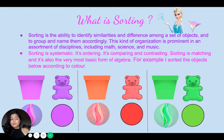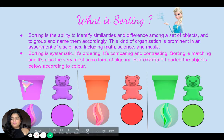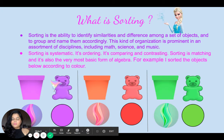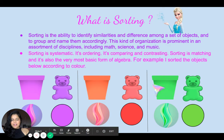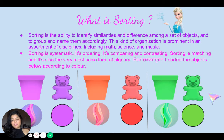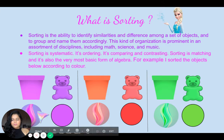For example, I sorted the objects below according to color. I put the purple objects in the left-hand column, I put the red objects in the central column, and I put the green objects in the right-hand column. So I sorted all these objects into three columns based on color: the purple column, the red column, and the green column.